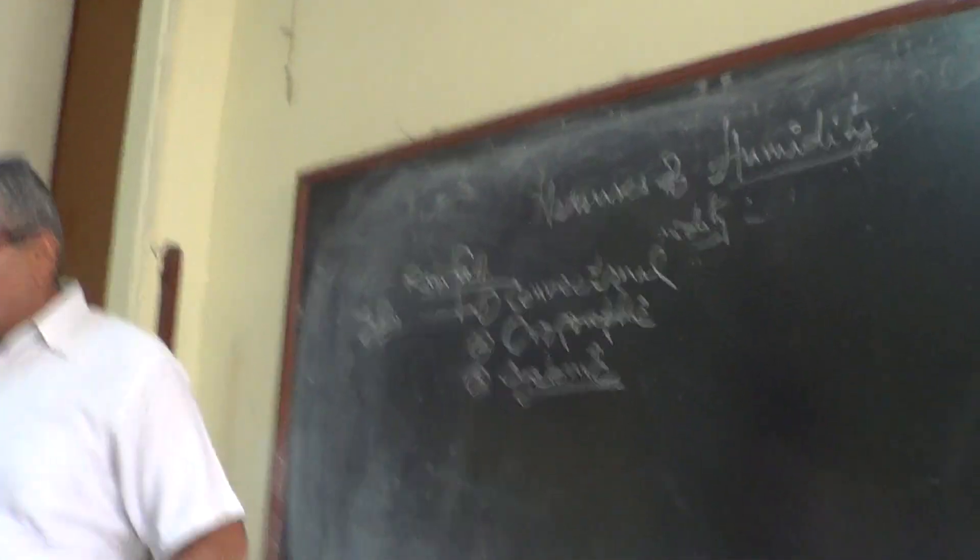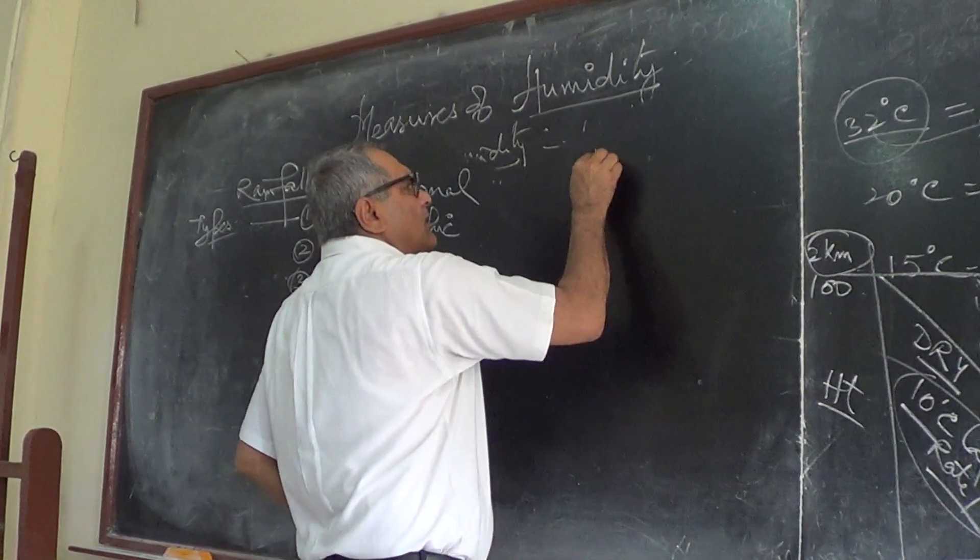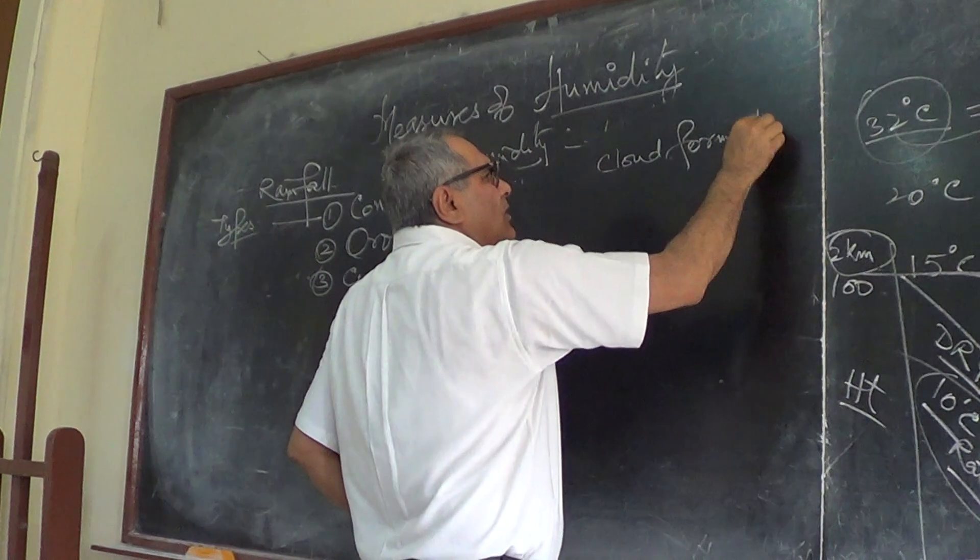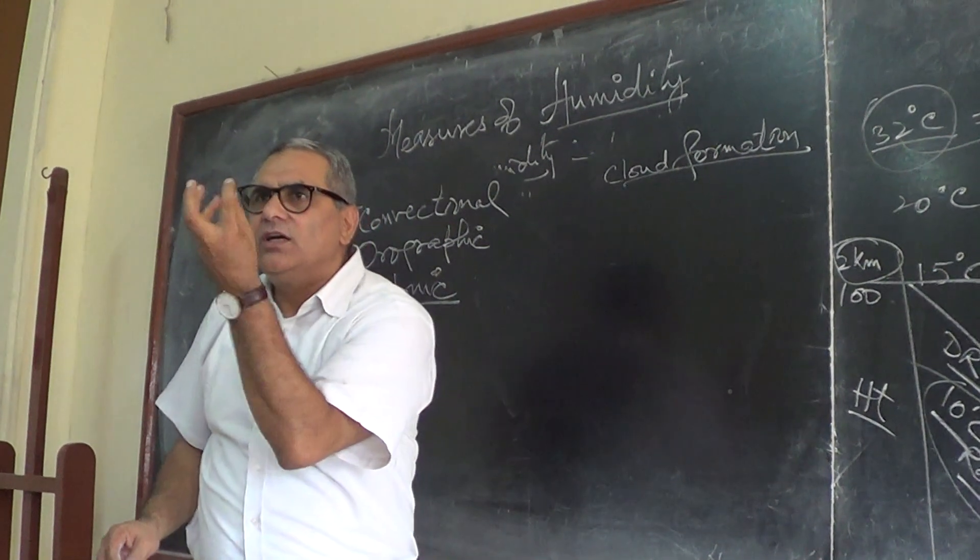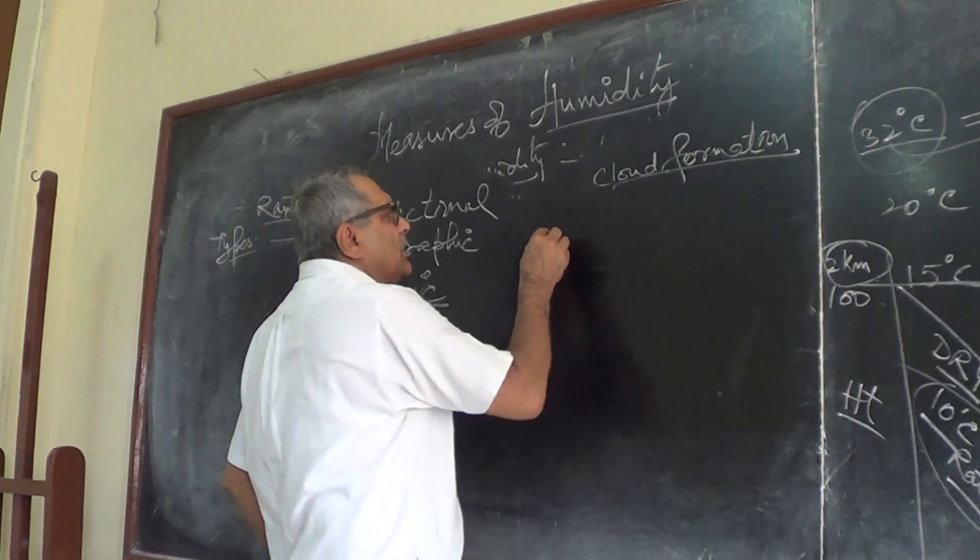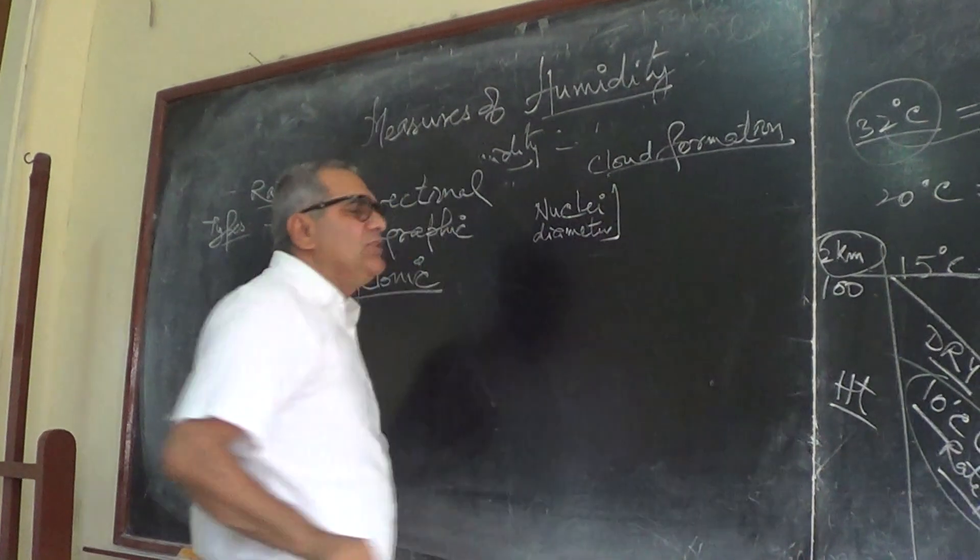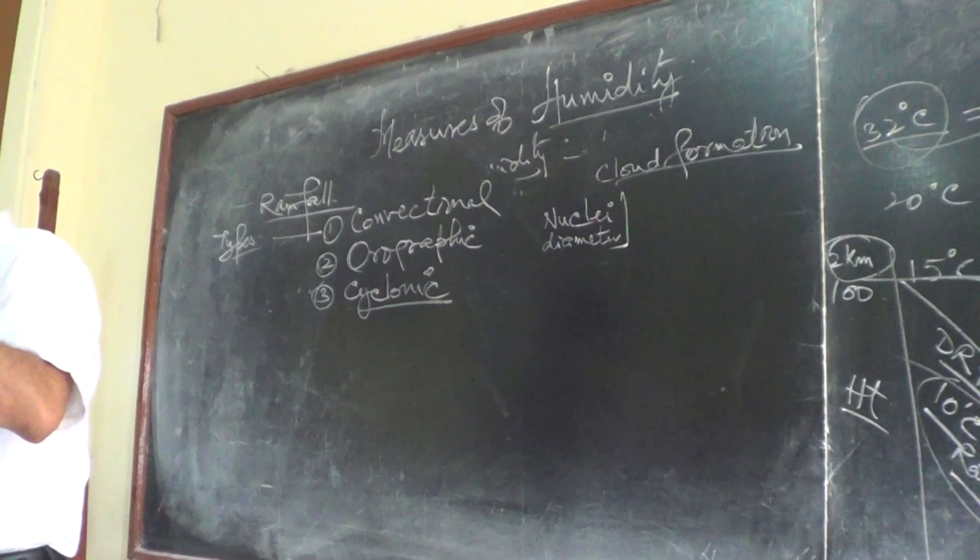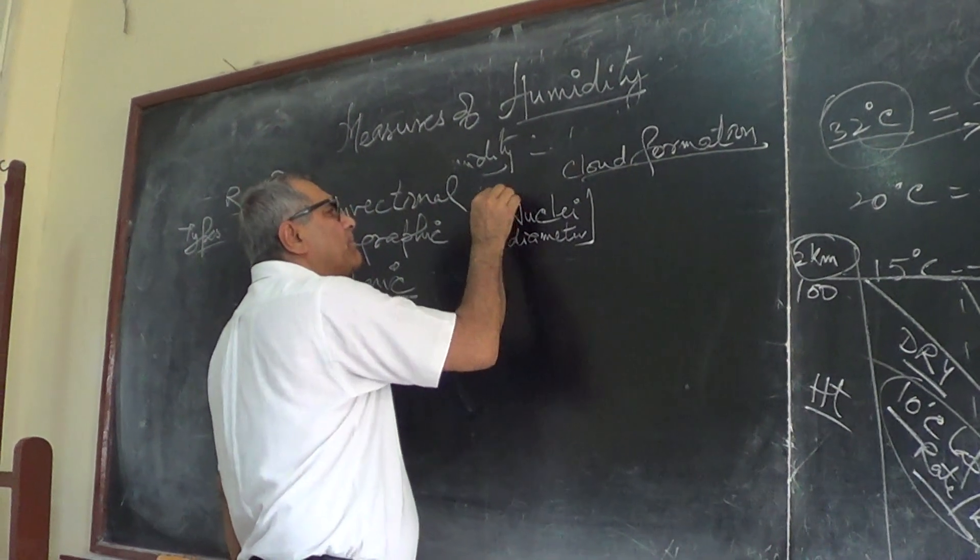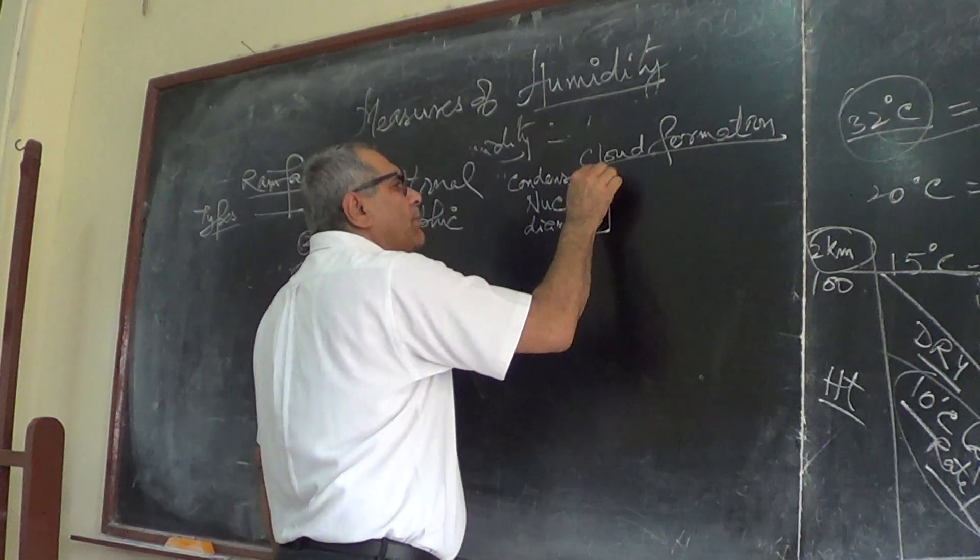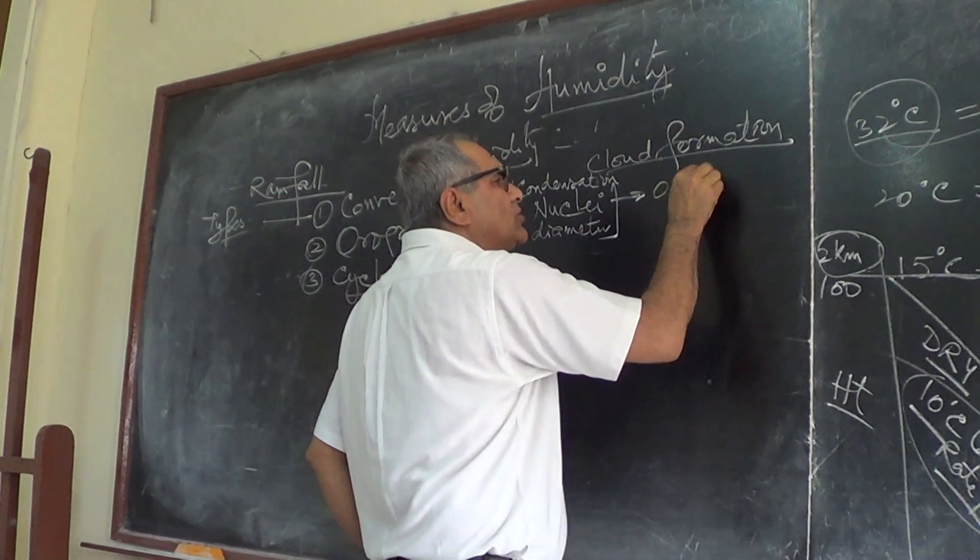This is the condensation nuclei. The size of the nuclei around which water molecules develop, nuclei diameter. The diameter of the nuclei is 0.0002 mm.